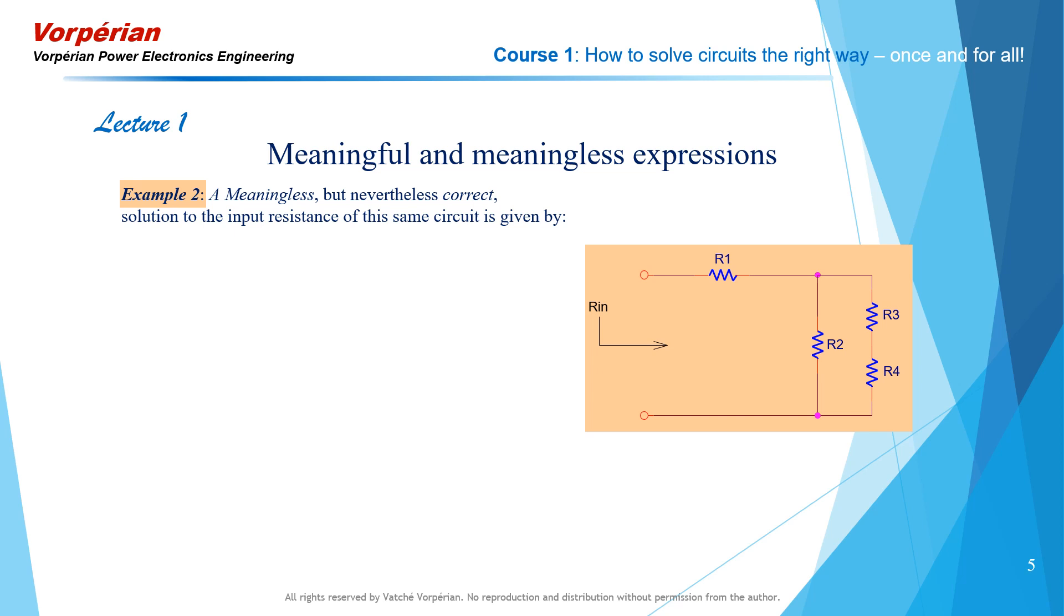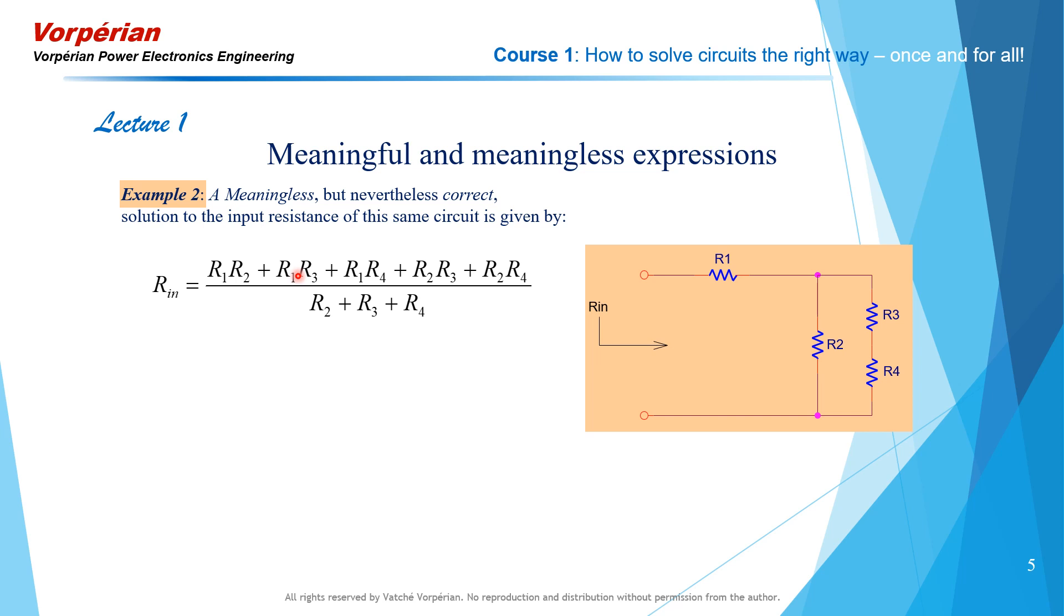Here is now a meaningless but nevertheless correct solution to the input resistance of the same circuit. It is given by this expression. When I look at it, I have absolutely no idea as to what is going on inside the circuit as far as these elements are concerned. To make the point, I'll take the circuit away. When you look at this expression, do you have any idea what is going on inside that circuit? I don't think so.